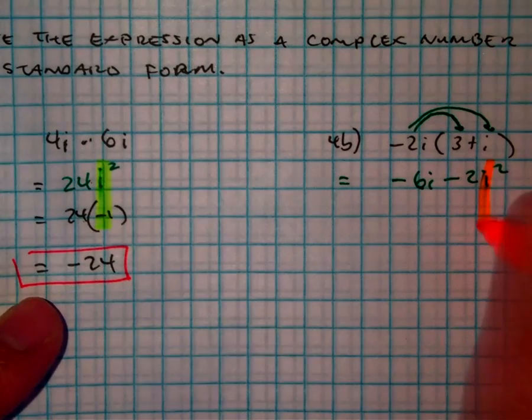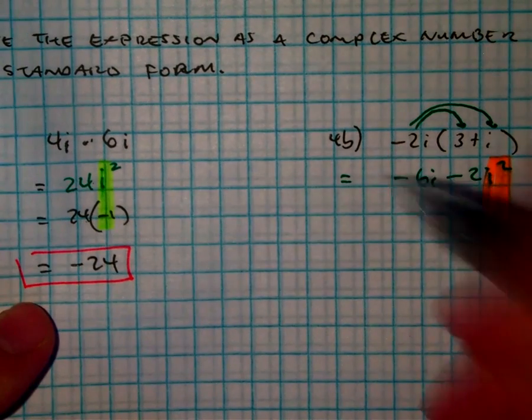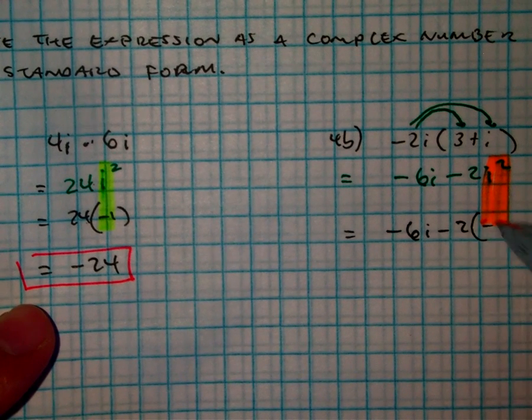Roy's, i squared is equal to? Negative 1. So, I have negative 6i minus 2 times negative 1.